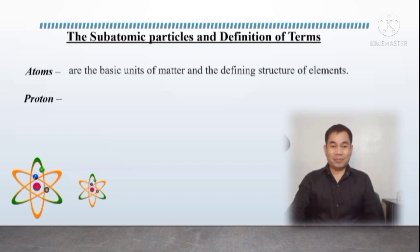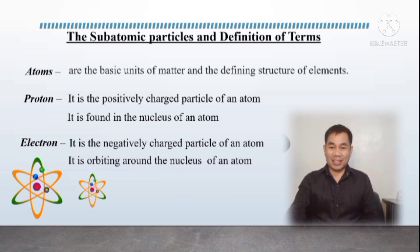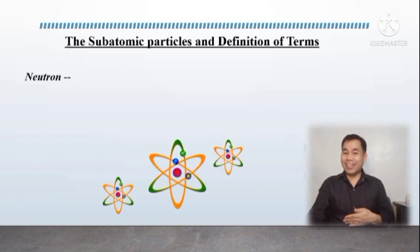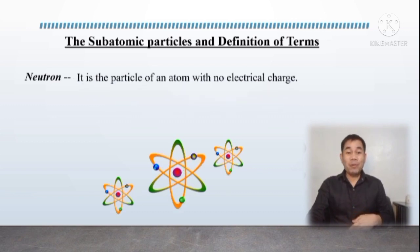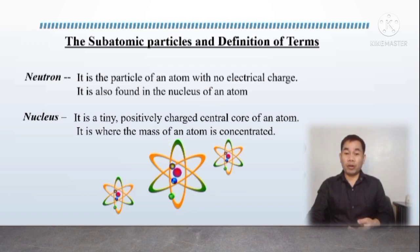So what is proton? Proton is the positively charged particle of an atom and it is found in the nucleus of an atom. And what is nucleus? Nucleus is a tiny, positively charged central core of an atom. It is where the mass of an atom is concentrated. Therefore, atoms consist of a nucleus made up of protons and neutrons, orbited by electrons, as what you can see on your screen.